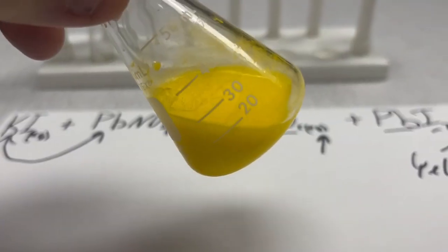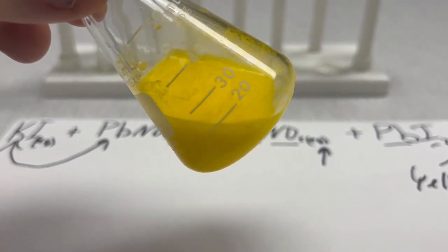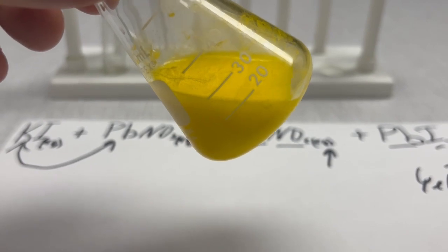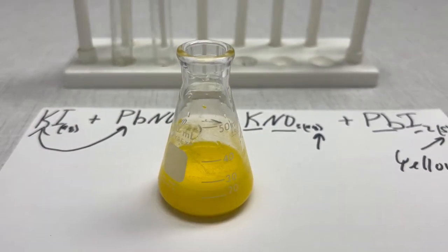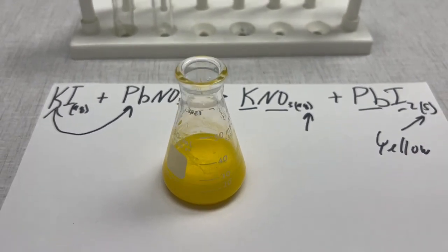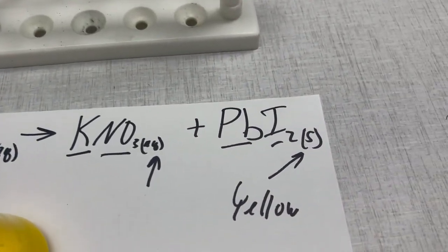But if you look at the bottom, you can see there's two layers developing here. That top layer looks more clear and then the yellow layer is settling towards the bottom here. So we can see that solid that is forming inside of here. So we call this a double displacement reaction where we precipitate, or we create that solid.